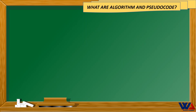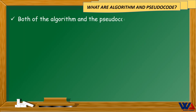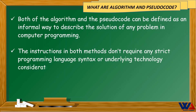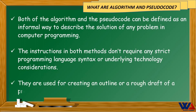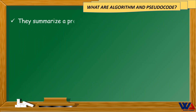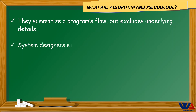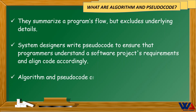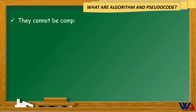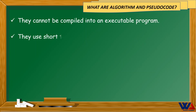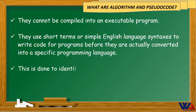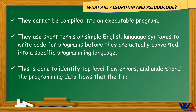Both algorithm and pseudocode can be defined as informal ways to describe the solution of any problem in computer programming. The instructions in both methods don't require any strict programming language syntax or underlying technology considerations. They are used for creating an outline or rough draft of a program, summarize a program's flow but exclude underlying details. System designers write pseudocode to ensure that programmers understand a software project's requirements and align code accordingly.